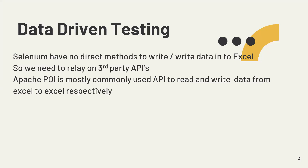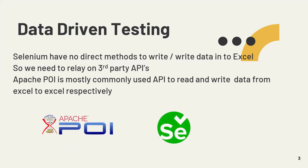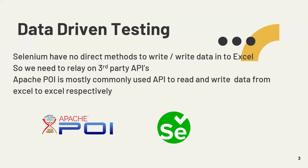Apache POI is the most commonly used API to read and write data from or to Excel. This is a third-party library. Earlier we used to have JExcel and a few other libraries, but Apache POI is the most trusted and excellent way to work with Excel. The beauty of Apache POI is that it can work with both versions of Excel — xlsx, which is the latest format, and xls, which is the old format. That is the reason people started using this third-party library called Apache POI.